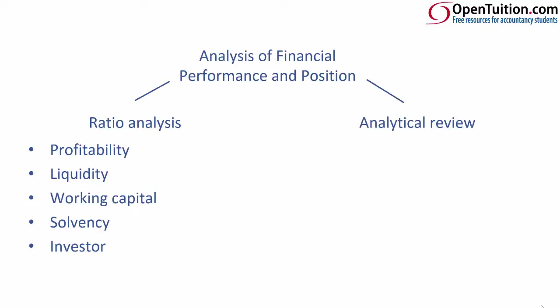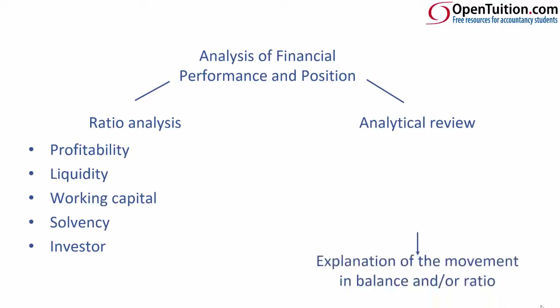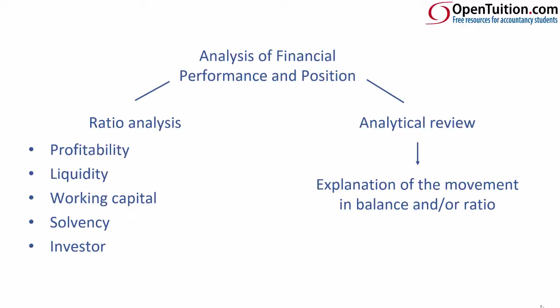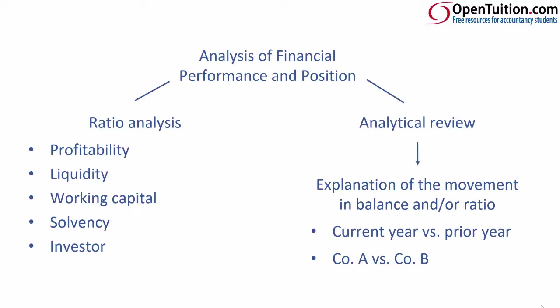The ratio analysis tends to be the easier aspect to answer in the exam. The analytical review is a little bit more of a challenge and gets you to think about things, because what it does is explain or get you to think about the explanation of the movement in a balance and/or a ratio — essentially questioning why it has moved. We're talking about a balance moving from last year to its current year figure, or alternatively comparing our results to that of a competitor or maybe even the industry average. So there are two types of questions: one, purely calculating the numbers and ratios; or two, asking you to think about why a movement has occurred in a balance and a ratio.